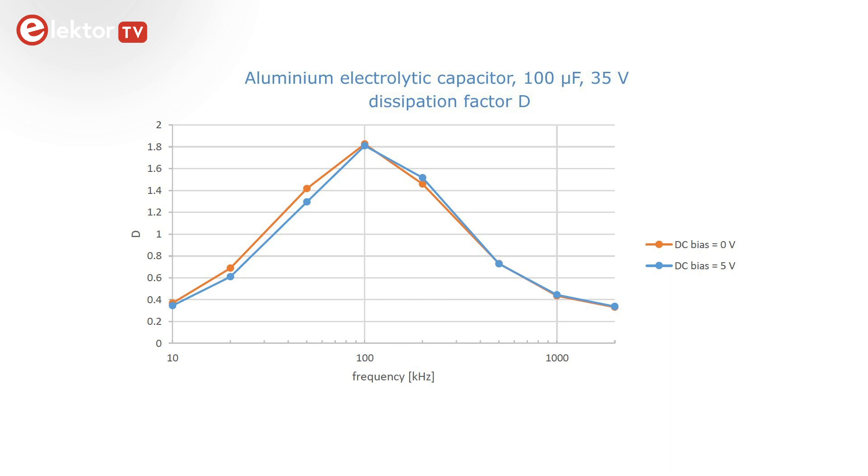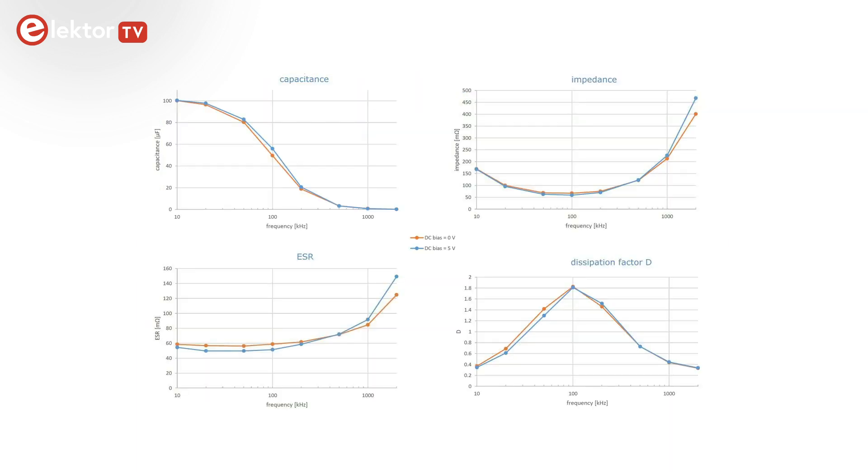The dissipation factor D peaks at 100kHz. Together, these graphs seem to suggest that the device was optimized for 100kHz and that it performs a bit better with the DC bias voltage over it. This seems normal as it is a polarized part.